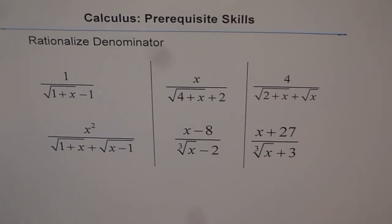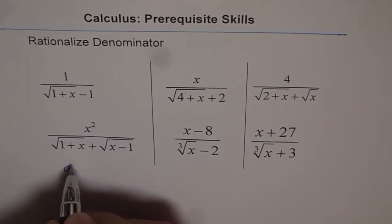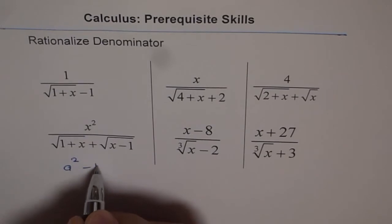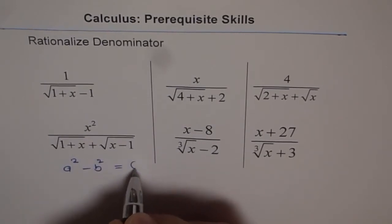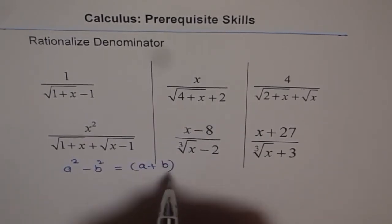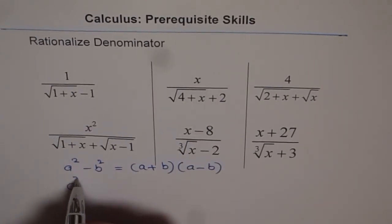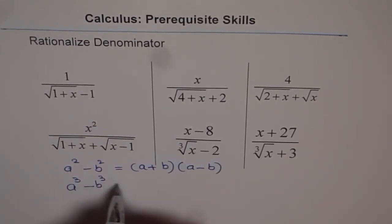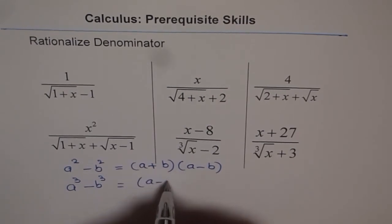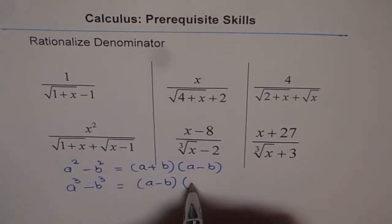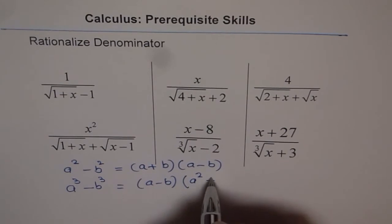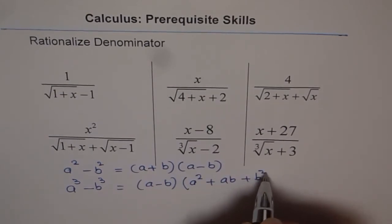Now, when you rationalize, remember two formulas. They are the basics. First is difference of squares. So a square minus b square equals to a plus b times a minus b. And a cube minus b cube is equal to a minus b times a square plus ab plus b square.